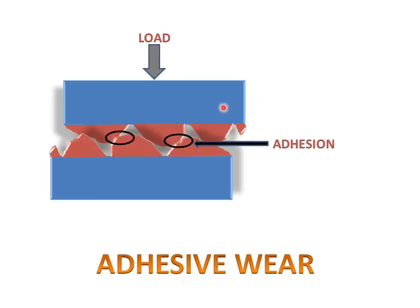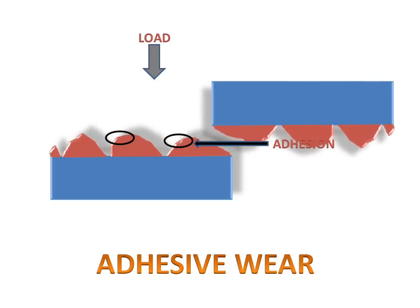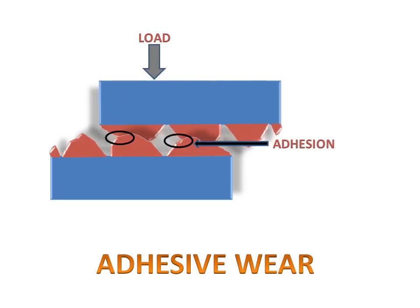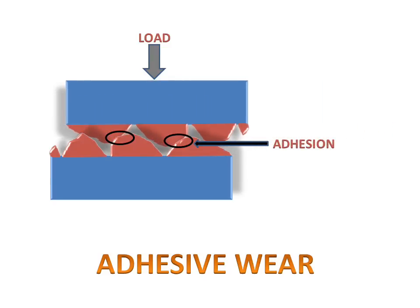Now, when the movement of the surface will occur, this cold weld junction will break. And by the breaking of this cold weld junction, a wear particle will be created. This is the movement of the surface, and by the movement of the surface, the junction will break and the wear particle will be created.